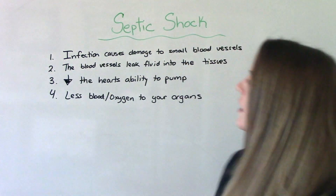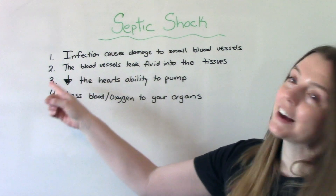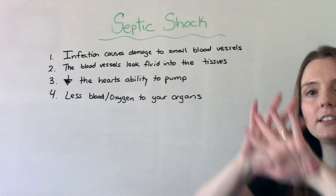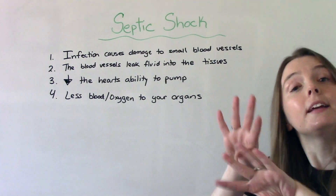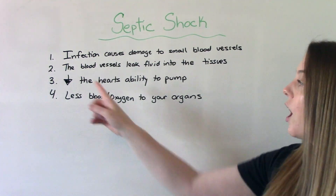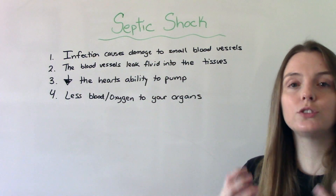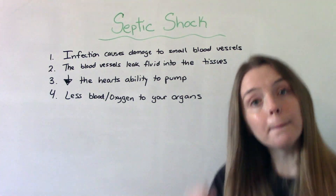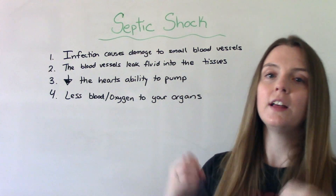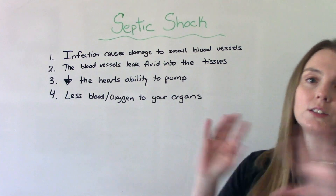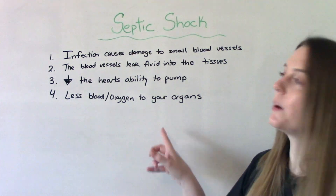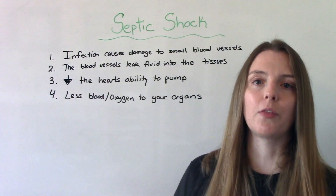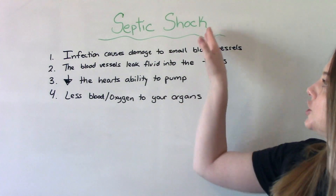So how does this happen? First you get an infection, which causes damage to our small blood vessels. Those small blood vessels then start to leak fluid into the surrounding tissues. Because of that leakage, the heart is not going to be able to pump as strongly as it normally would — it decreases the heart's ability to do its job. Because the heart isn't pumping like it's supposed to, you're not getting enough blood flow, and therefore not enough oxygen to your organs and surrounding tissues. This is what we mean by low perfusion — the lack of blood, aka lack of oxygen, being distributed throughout the body. That's how somebody can go into shock from an infection.